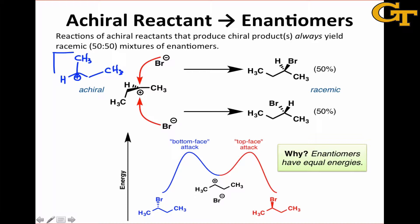Let's imagine a bromide anion coming in and attacking this cation either from above it — the top face — or below it — the bottom face. What we find in practice is that we arrive at a 50/50 mixture of the products arising from top face attack and bottom face attack. The most important thing to notice about these yields is that they're equal to one another, and this will always be true for reactions of this type. The two products share an enantiomeric relationship — they are enantiomers.